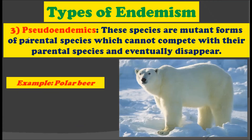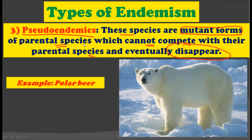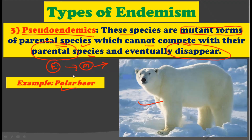The third type of endemism is pseudo-endemics. These species are mutant forms of their parental species which cannot compete with their parental species and eventually may disappear. In evolution, mutant species are created due to certain mutations, but these new species cannot compete with their parental species. The example for this is the polar bear — this species is a mutant form of its parental species but is still endemic, being a mutant form that may eventually disappear in the course of evolution.